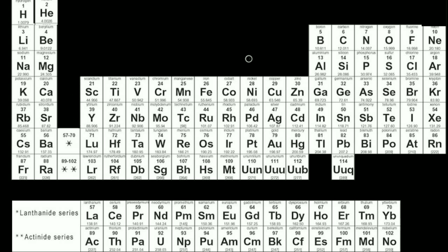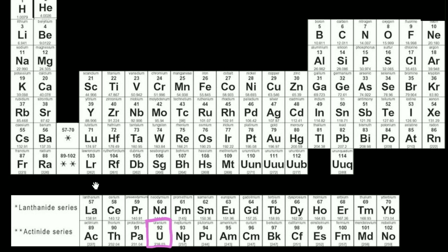So we learned in the last video our nearest noble gas electron configuration. Let's figure out, based on our past couple of rules, what electron configuration we could expect for — let's do uranium. Uranium's easy enough to pronounce. And uranium is actually going to be an exception. But let's figure out what exactly we could expect if we were going to try to generalize a rule for electron configurations for uranium, and let's use our nearest previous noble gas electron configuration.